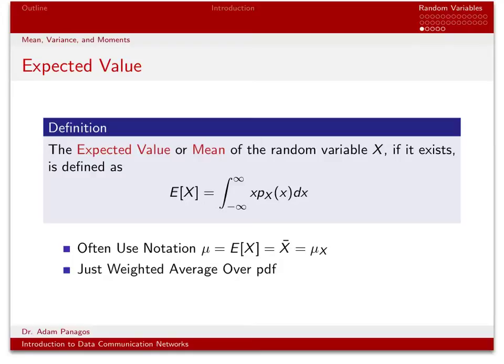Other random variables that we deal with also have a mean. It might not be as easy to figure out where that mean is by looking at the PDF, since some random variables have PDF functions that aren't symmetric. But nonetheless, we can still compute the mean of these random variables. That tells us where on average, if we do experiment after experiment, the random variable shows up on average on the real line.